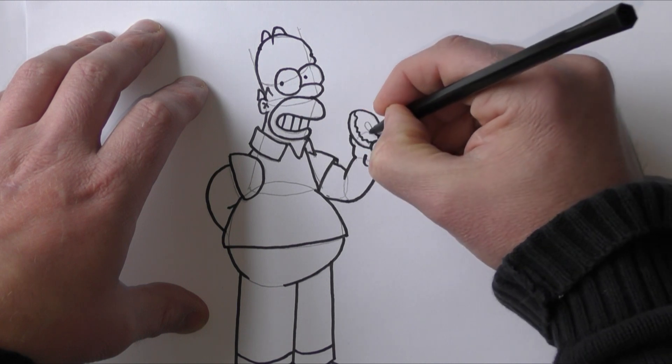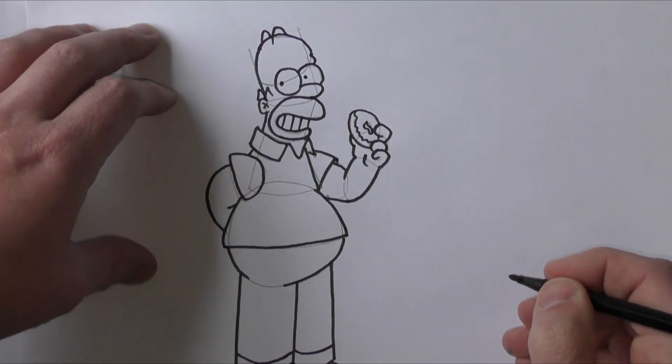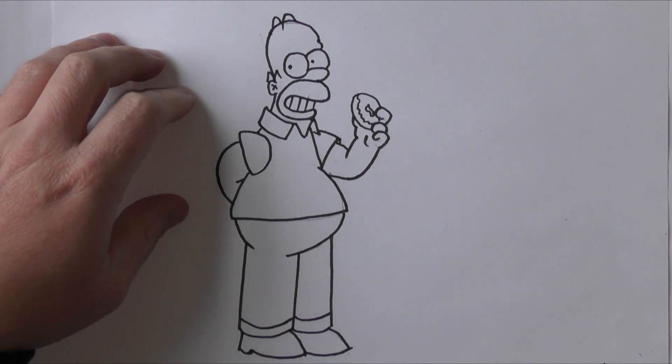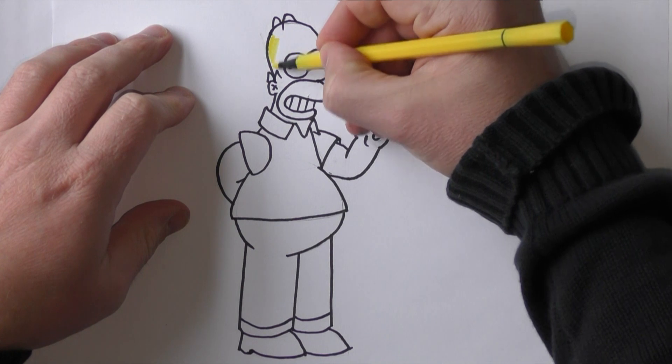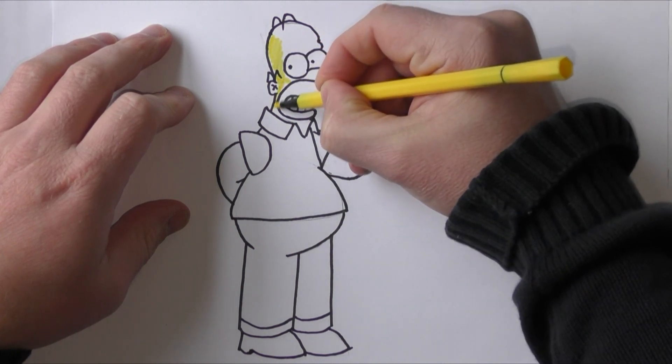Now what we need to do is just rub out all the pencil lines, which I've just gone off and done there. And then you've got your picture of Homer back and now we can start coloring in. As we know he's got a yellow face, so we'll just color his yellow face in there.